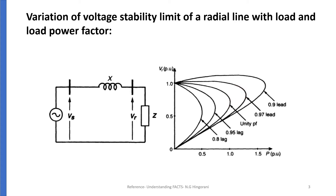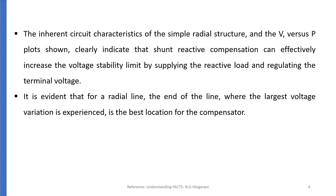This peak of the nose curve indicates the instability margin of the system. The inherent circuit characteristics of a simple radial structure and the PV plot clearly indicate that shunt reactive compensation can effectively increase the voltage stability limit by supplying the reactive load and regulating the terminal voltage. It is evident that for a radial line, the end of line — where the largest voltage variation is experienced — is the best location for the compensator.